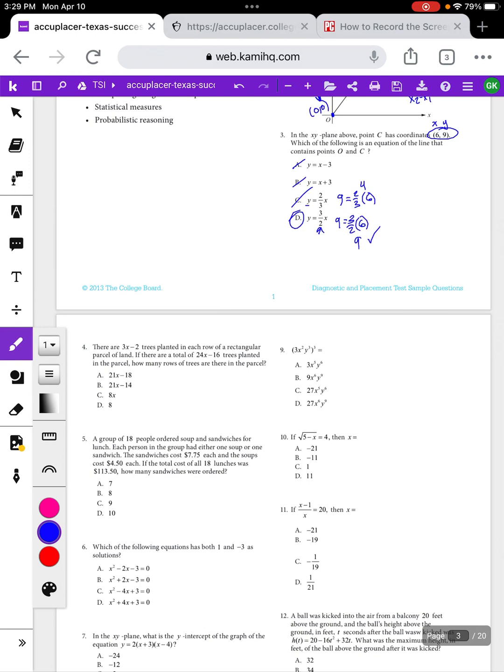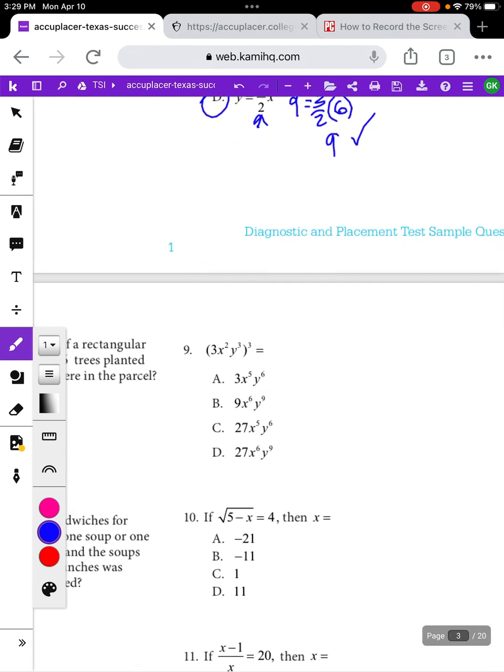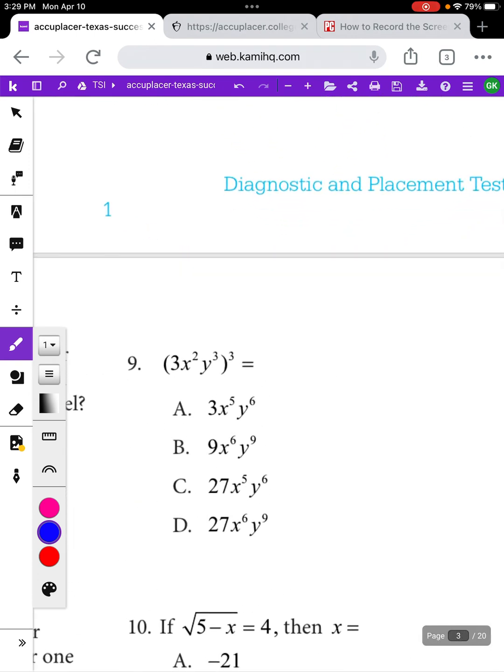Let's look at another algebra question that people tend to find kind of confusing, and that's something involving exponent rules. On number 9, we have 3x squared y to the third, and then in parentheses, all of that to the power of 3.